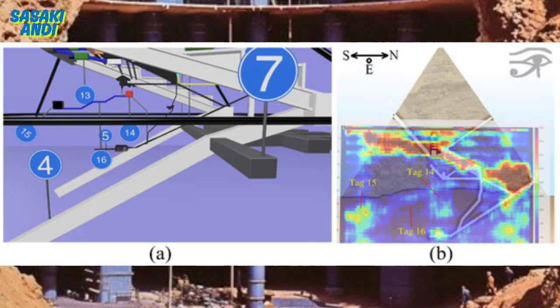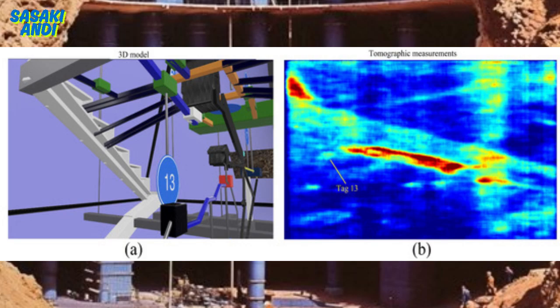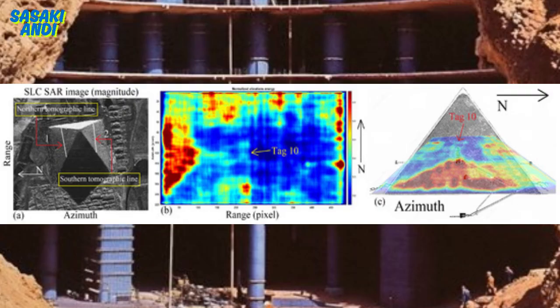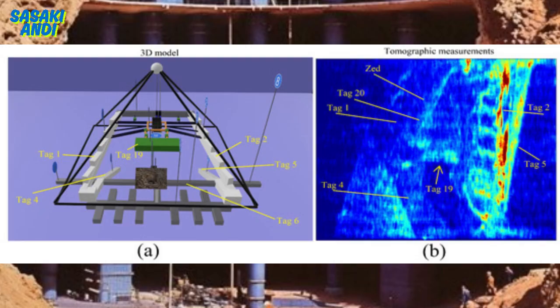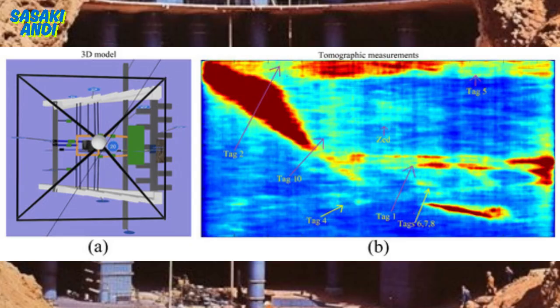Oh, I see. So it's like how the sound of an ambulance siren changes as it passes you, but with radar waves in a pyramid. Exactly. By analyzing those tiny changes in the frequency of the radar signals, the researchers were able to build a 3D map of the pyramid's internal structure, sort of like taking an x-ray but without any harmful radiation. That's incredible. So they're essentially using the pyramid's own vibrations to create a picture of what's inside. Exactly. And the best part is this method is completely non-invasive. It doesn't require any digging, drilling, or anything that could potentially damage the pyramid.